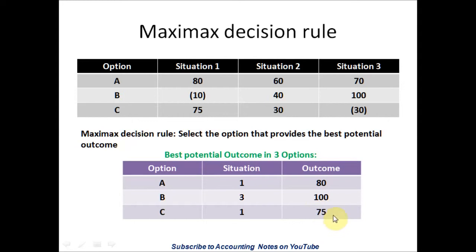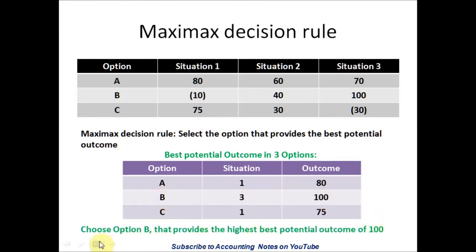Now we need to choose the highest best potential outcome from the three options. The highest one is $100 for Option B. Therefore, we choose Option B, which provides the highest best potential outcome of $100.